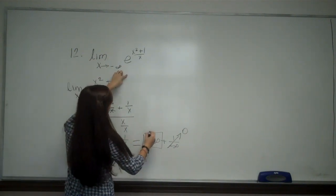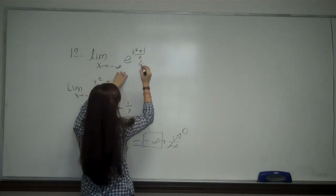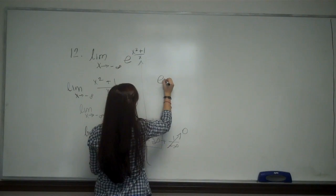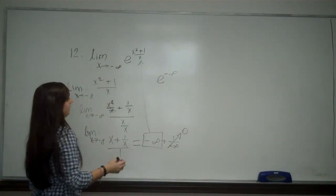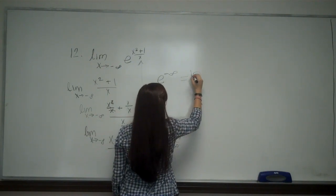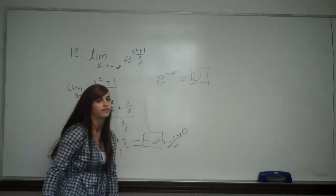Now I need to put this back into my e value. So I have e to the negative infinity, and e to the negative infinity is going to be 0 because of the graph.